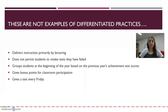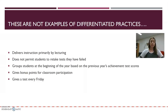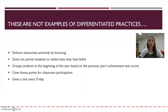The second non-example is not permitting students to retake tests they have failed. Before covering this material, I wouldn't have known this was acceptable, but it makes sense — students do deserve a second chance to prove they know the information, in a different way or later in the unit or year. Another non-example is giving bonus points for classroom participation, similar to giving bonus points for bringing in Kleenexes or dry erase markers. Bonus points shouldn't be given for non-academic things — students should already be attending class and participating.